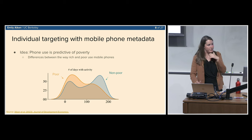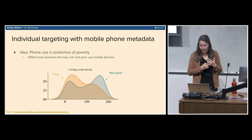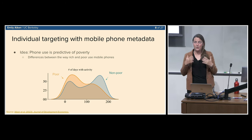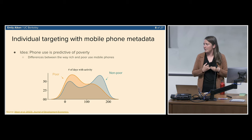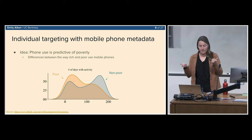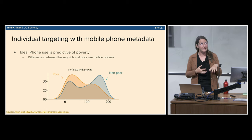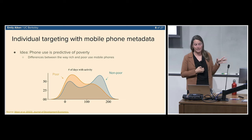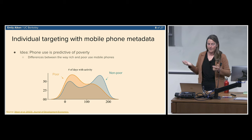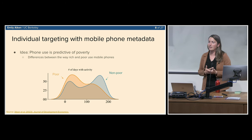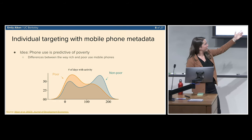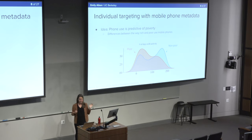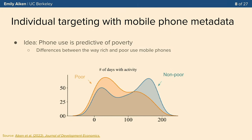After selecting the poorest 100 cantons, budget constraints meant we couldn't pay everyone living there. So we turned to individual targeting: figuring out who within those cantons was poorest. Again with no useful data, we turned to using mobile phone data to predict poverty at an individual level and determine individual eligibility for cash transfers.